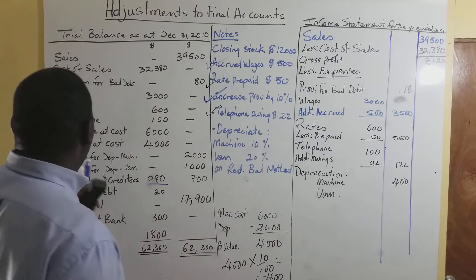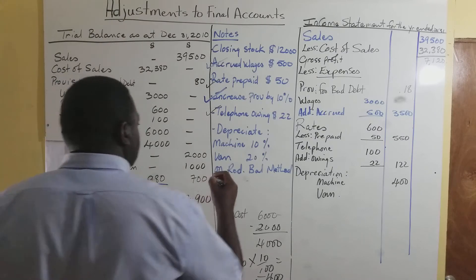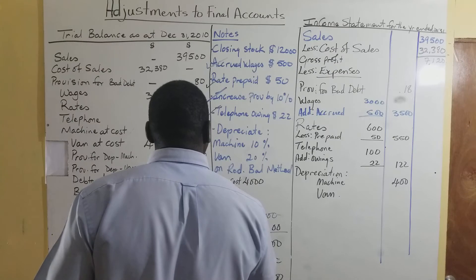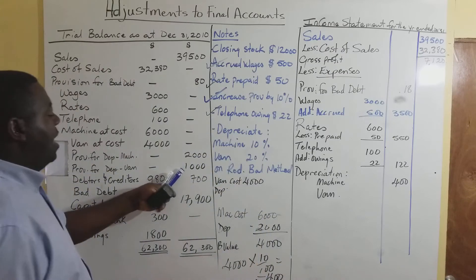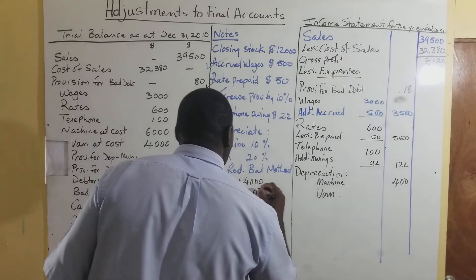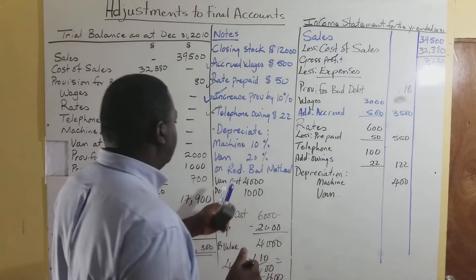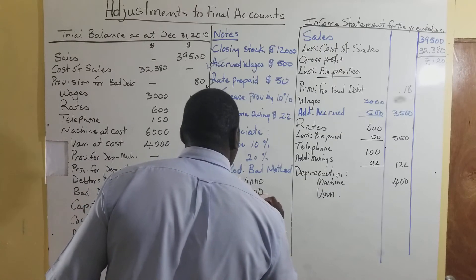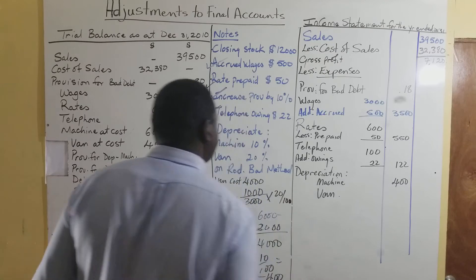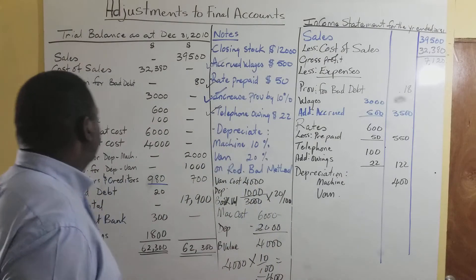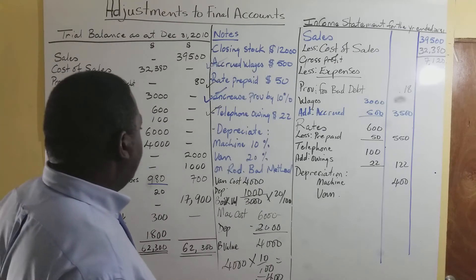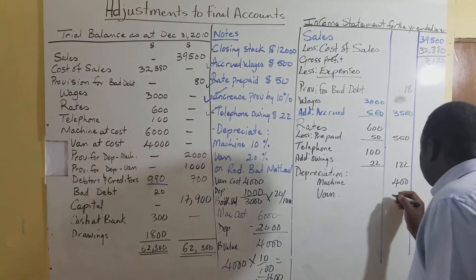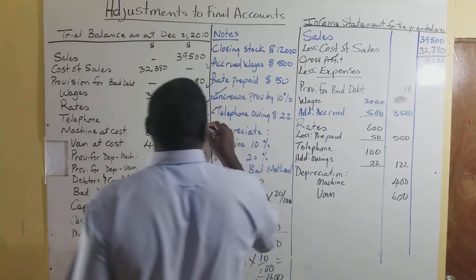The same process applies to the van. Van at cost is $4,000. The accumulated depreciation being carried is $1,000. Subtracting gives a book value of $3,000. We find 20% of $3,000, which gives us $600 as the depreciation for van for this year.